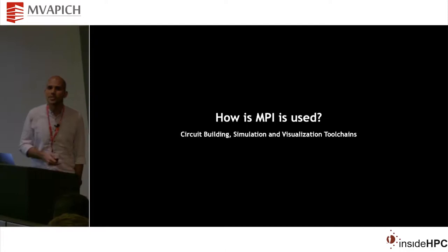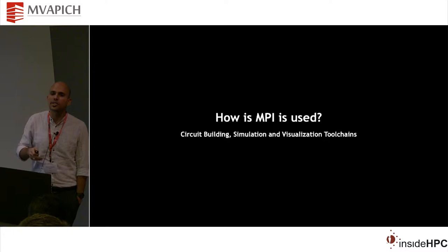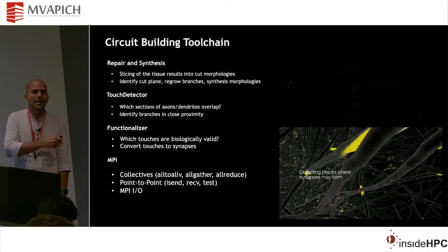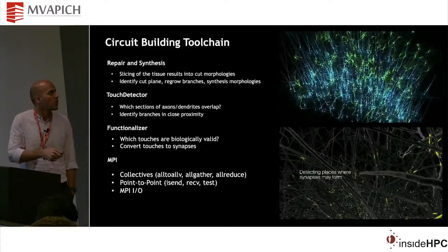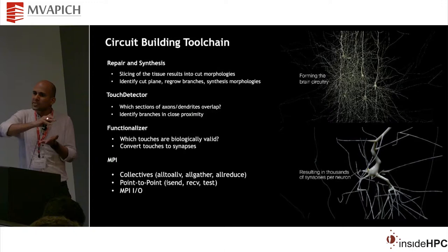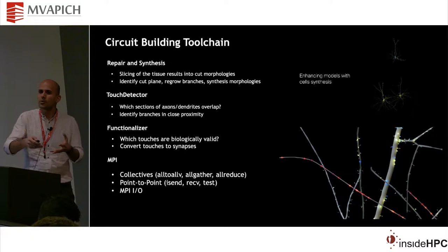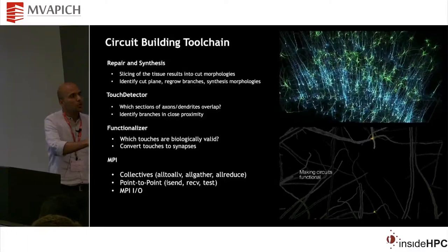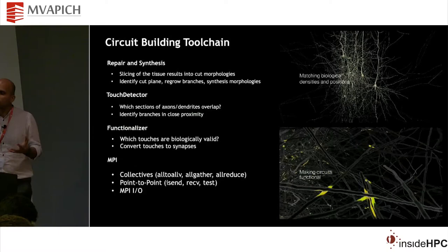How does MPI come into the picture in all these simulations? The first tool chain we have is the circuit-building tool chain. When you take tissue from the microscope, it's not fully intact after slicing, so you have to repair it — regrowing branches based on lab data and literature. That process is called repair and synthesis. You then put together many neurons of different types to form the circuit.